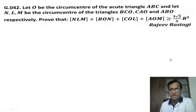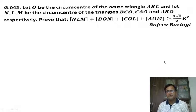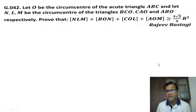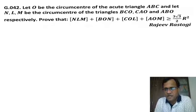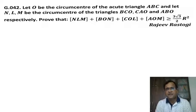Hello everyone. Today I am going to discuss an elegant geometric inequality problem from the book MapStorm. There is an acute angle triangle ABC whose circumcenter is O, and there are three other points N, L, M which are the circumcenters of triangles BCO, CAO, and ABO respectively. You have to prove that the sum of the areas of these four triangles is greater than or equal to 3√3/2 · R², where R is the circumradius of the parent triangle ABC.